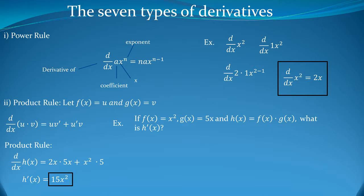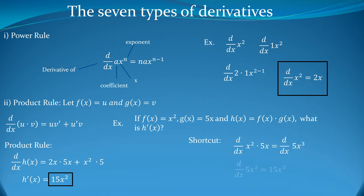There is also a shortcut you can use. You take the derivative of x² times 5x by first multiplying them together to get 5x³, then applying the power rule to get 15x². That is, 3 times 5 times x^(3−1) gives 15x².